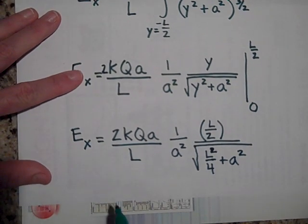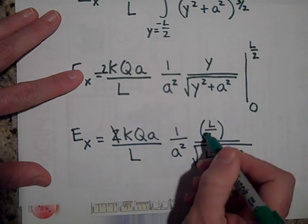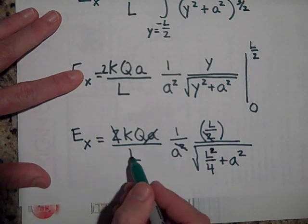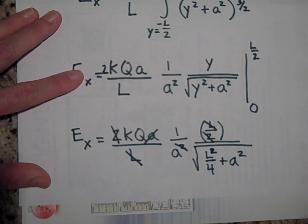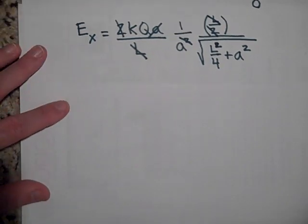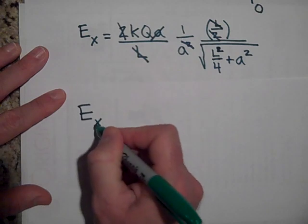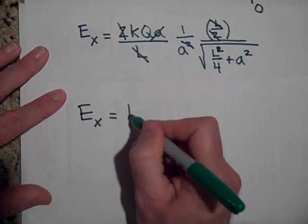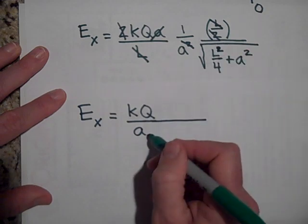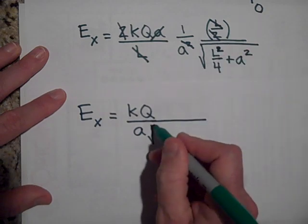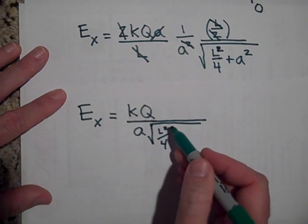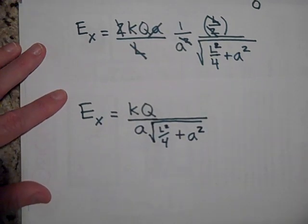Okay, so there's my answer. Now we can simplify that a little bit. This 2 right here will cancel with that 2, and this A right here will cancel with one of those A's, and this L right here will cancel with that L. And so I'm left with the following equation.